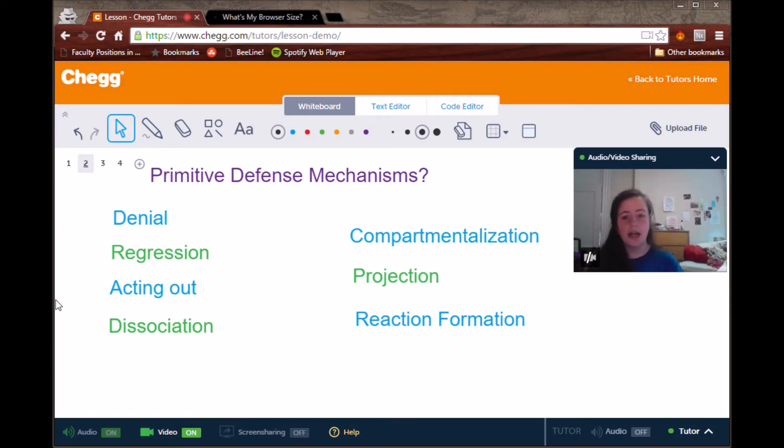Projection is where a person experiencing some sort of negative thoughts or feelings or actions attributes them to somebody else instead. So an example of this would be a spouse who is cheating and instead believes that their spouse is the one who is being unfaithful, believes that their spouse is having an affair, even though it's them who's having one. To clarify, it's not that they don't believe that they are also having an affair, they just believe that the other person is too.